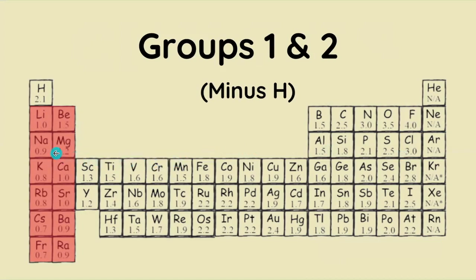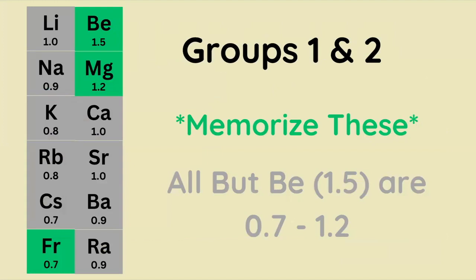The metals excluding hydrogen—you only need to memorize three of these twelve: beryllium, magnesium, and francium. Other than beryllium, all of these atoms' electronegativity values fall within the range of 0.7 to 1.2.